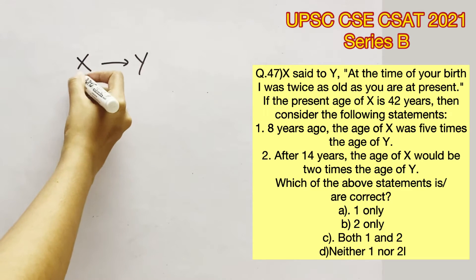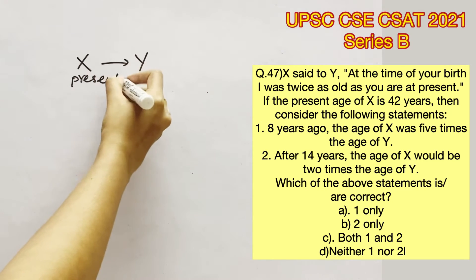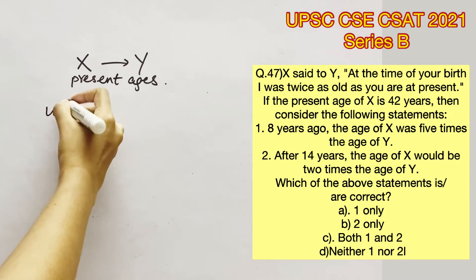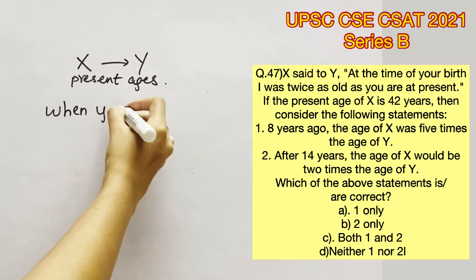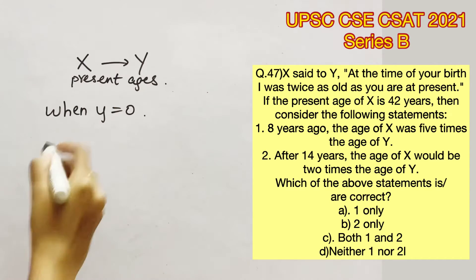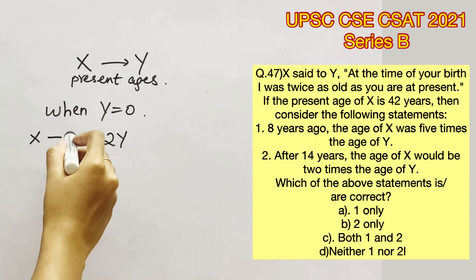X said to Y, at the time of your birth, I was twice as old as you are at present. Let's say that X and Y are the present ages of X and Y. So at the time of birth of Y, Y's age would be 0. And it's given that X at that time was twice the age of Y at present, which can be represented as such.